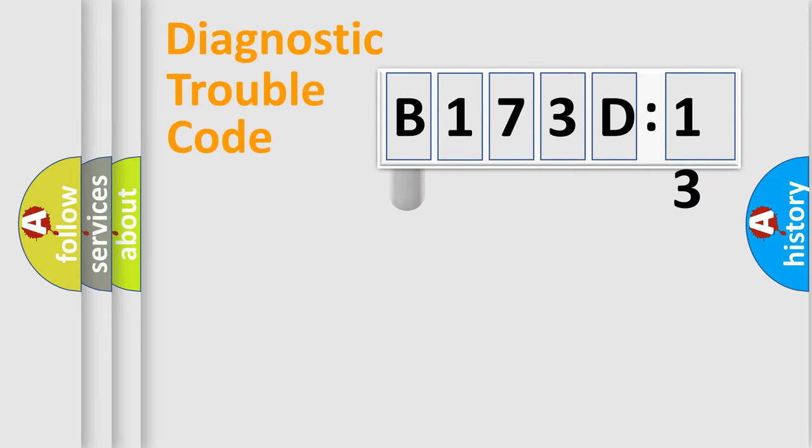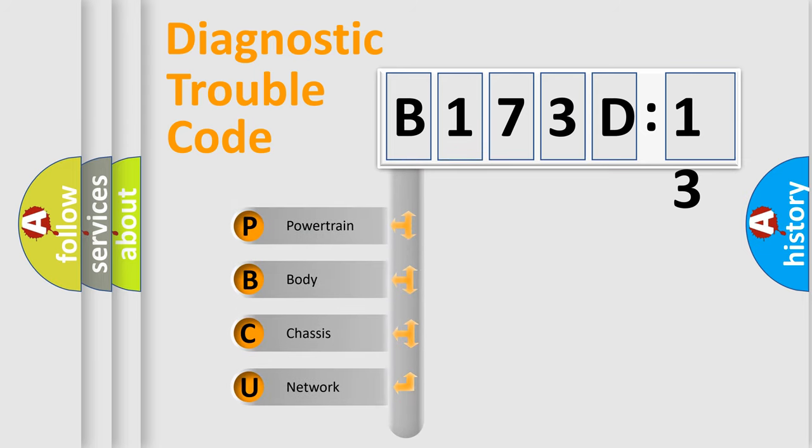First, let's look at the history of diagnostic fault code composition according to the OBD2 protocol, which is unified for all automakers since 2000. We divide the electric system of automobile into four basic units.